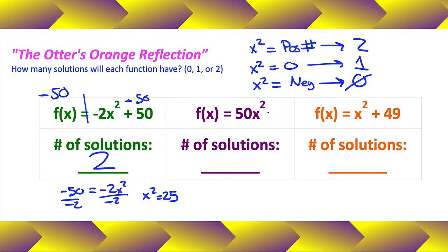Okay, so 50x squared set equal to zero divided by 50 divided by 50. Yeah, it doesn't really matter. x squared is going to equal zero. So that means we're going to have exactly one solution. And that solution is going to be zero. Zero is the only number that when you square it turns into zero. So yeah, there we go. That's the only solution. There's no such thing as a positive negative zero. There's just zero.